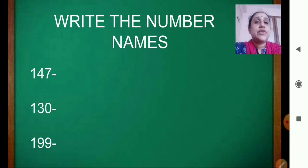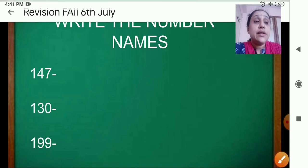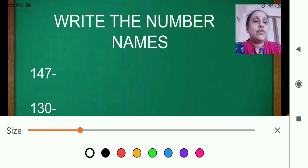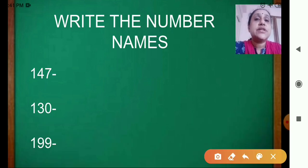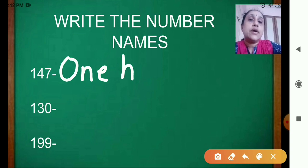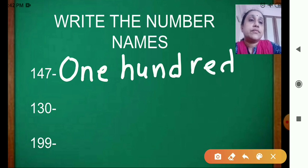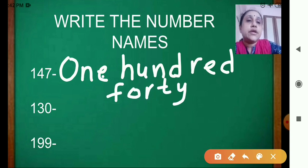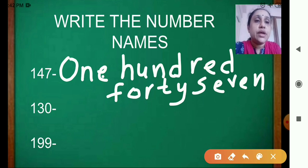First we will start with writing the number names. You all remember the number names. See the first one: one hundred forty seven. Now start writing. One hundred forty seven.